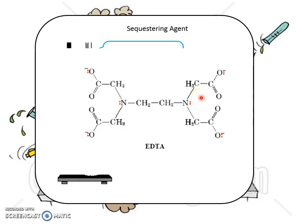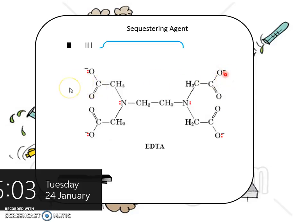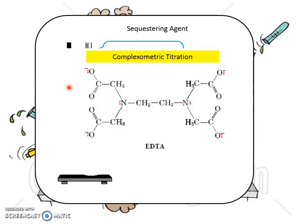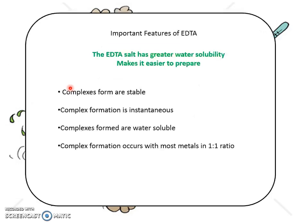The EDTA molecular structure is as follows. Because EDTA is the most common sequestering agent and most common ligand used for complexometric titration, complexometric titration is often called EDTA titration. EDTA is most commonly used because the complexes formed are stable, formation is instantaneous, the complexes formed are water-soluble, and the complexes are formed in a one-to-one ratio — meaning one mole of EDTA equals one mole of metal.